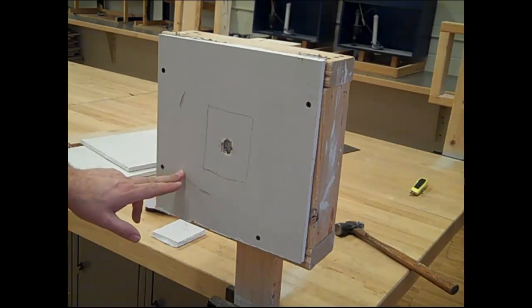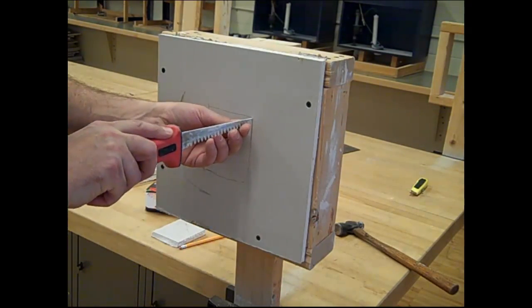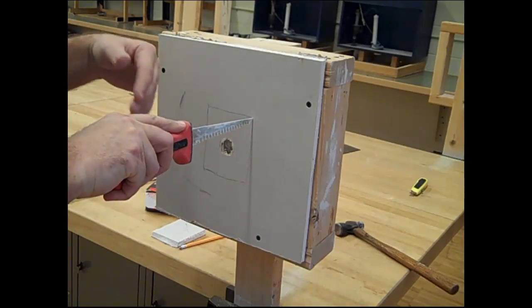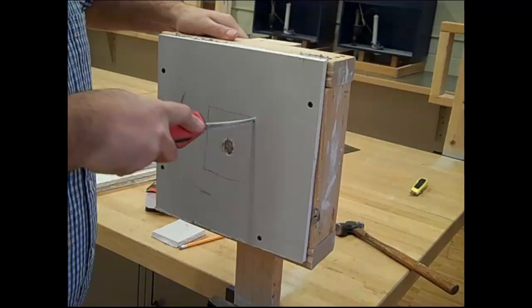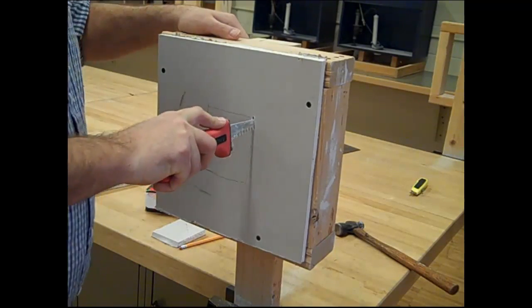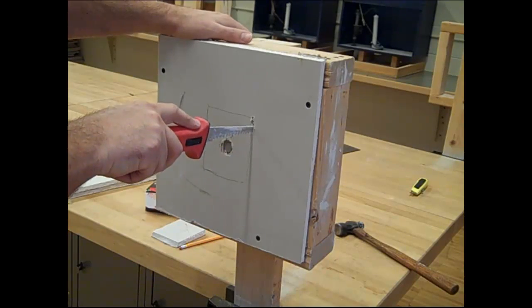We're going to cut this out with a keyhole saw. To get started, line up the blade on the outside edge of the hole. Just turn and push, turn and push. It's kind of like carving a pumpkin. Stay on the outside of the lines.